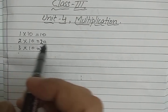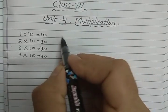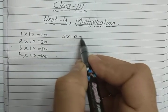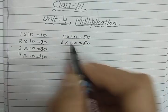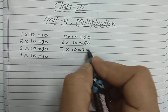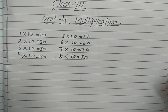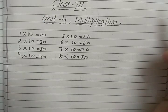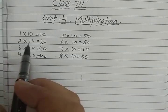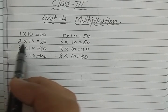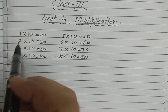1 ten is 10, 2 tens are 20, 3 tens are 30, 4 tens are 40, 5 tens are 50, 6 tens are 60, 7 tens are 70, 8 tens are 80, and so on. Now what do you observe here? Whenever we multiply any number by 10, we write the number and then add a zero with that number.